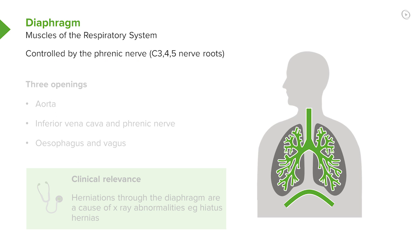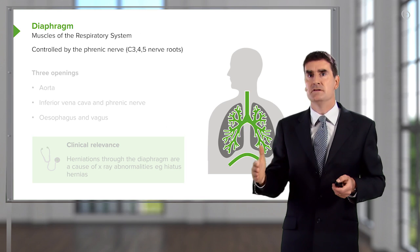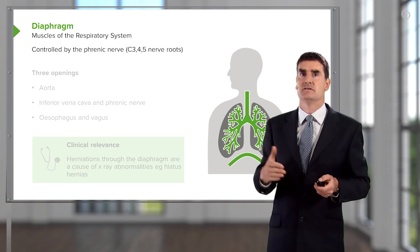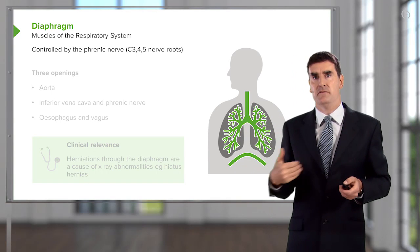Diaphragmatic movements and contractions are controlled by the phrenic nerve, which arises from the C3, C4, and C5 nerve roots. Without the phrenic nerve, the diaphragm will not move. If you have a bilateral phrenic nerve palsy — for example, from a cervical lesion above C3, C4, or C5 at C2 — then the patient will die from respiratory failure unless mechanical ventilation is used, because neither diaphragm is moving.